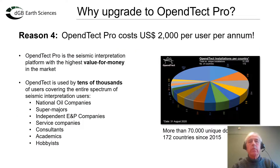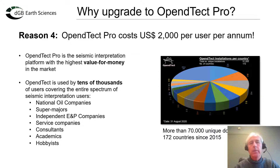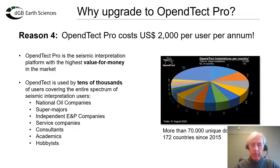The last reason for going with OpenDetect Pro is that it costs merely two thousand dollars per user per annum. At that price, it is by far the highest value-for-money seismic interpretation system in the market today. OpenDetect is used by tens of thousands of users covering the entire spectrum of seismic interpretation users, ranging from national oil companies, super majors, independent E&P companies, service companies, consultants, academics, and hobbyists.